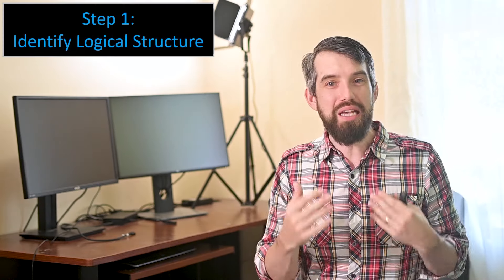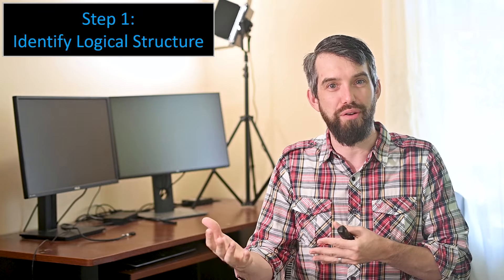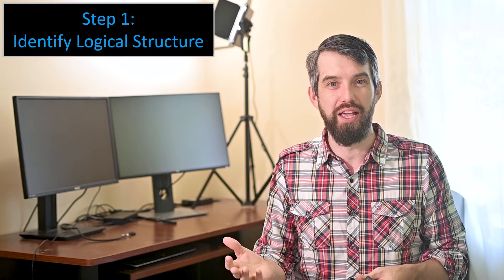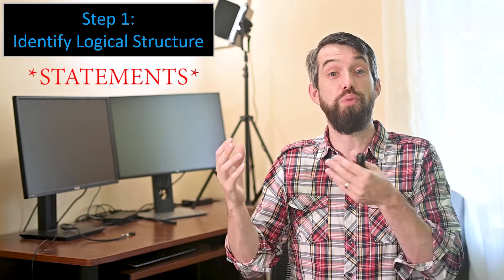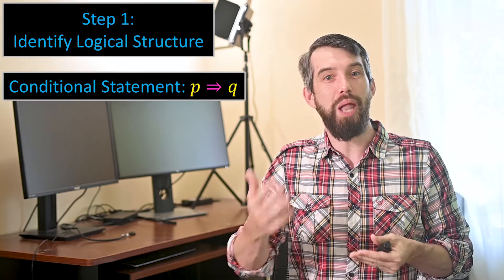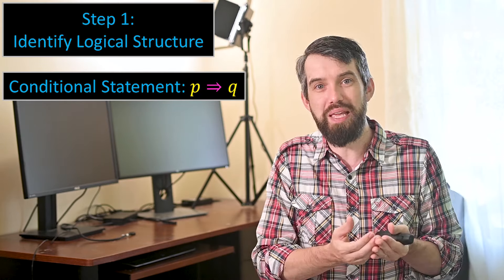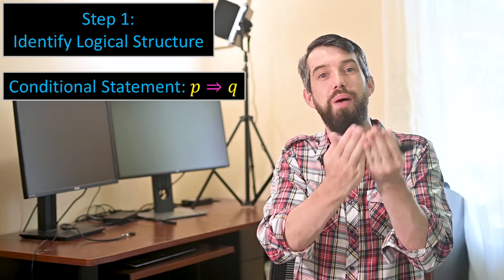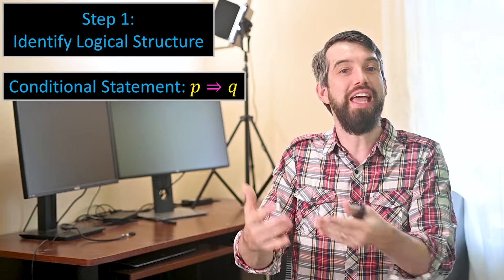All right, so step one that I always like to do first is to identify the logical structure of whatever it is that I'm tasked with proving. The most common one you're going to see is the conditional statement P implies Q. Whenever you see this symbol with this arrow, it means you have some assumptions P and you're trying to prove some conclusion Q.